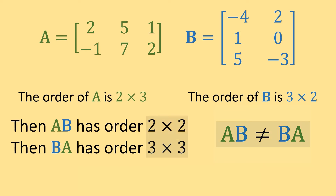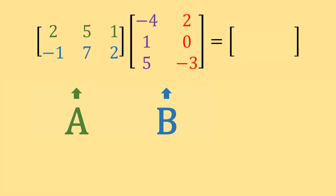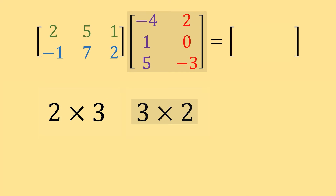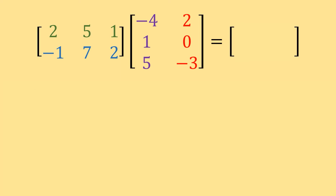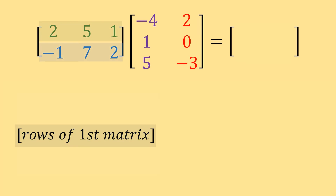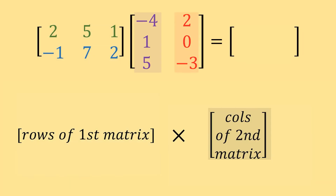So let's multiply matrix A times matrix B. How does a 2 by 3 matrix times a 3 by 2 matrix result in a 2 by 2 matrix? That has to do with how we actually multiply within matrix multiplication. We take rows from our first matrix and multiply them by columns of our second matrix.